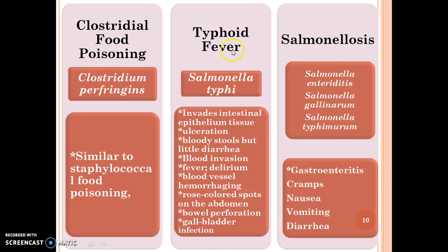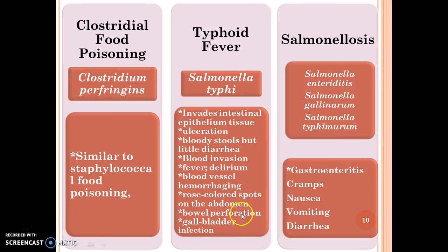Typhoid fever is caused by Salmonella typhi. The symptoms are: invasion of intestinal epithelial tissue, ulceration, bloody stools but little diarrhea, blood invasion, fever, delirium, blood vessel hemorrhaging, rose-colored spots on the abdomen, bowel perforation, and gallbladder infection.